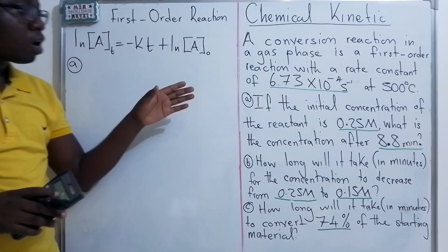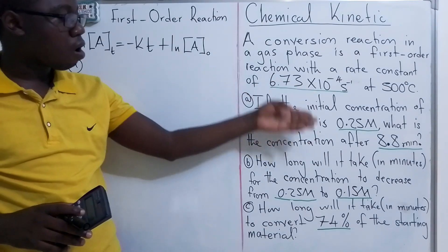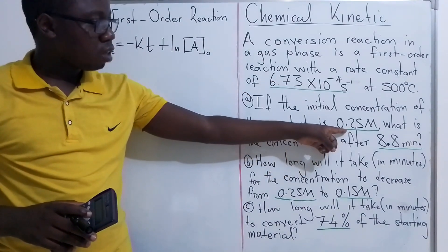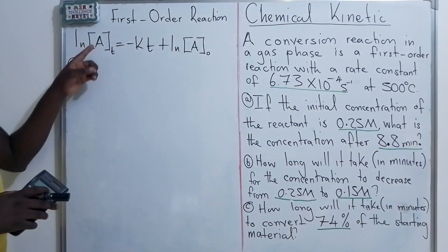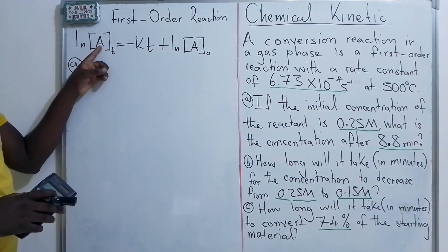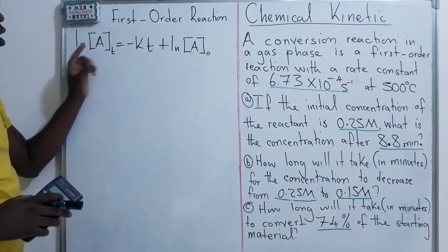So when you look at the question that we have, we have the k value, which is the rate constant. We have the initial concentration, we have the time. So they have asked us to find the concentration after 8.8 minutes.